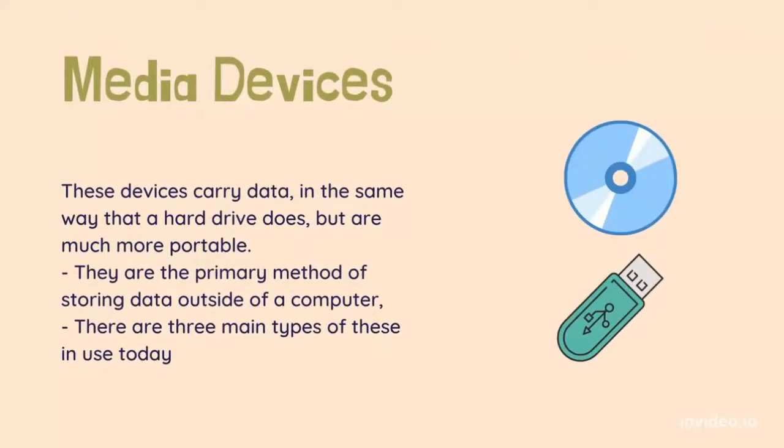Media devices: floppy, CD-ROM, DVD, USB. These devices carry data in the same way that a hard drive does, but are much more portable. They are the primary method of storing data outside of a computer, and the main method of transferring information between computers without the use of a network, such as the internet. There are three main types of these in use today.